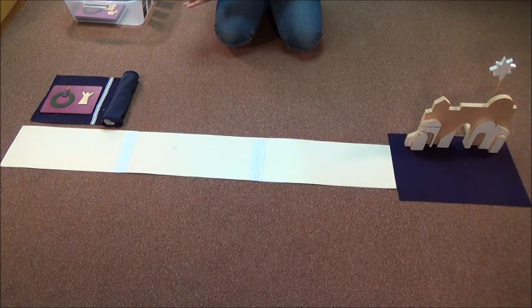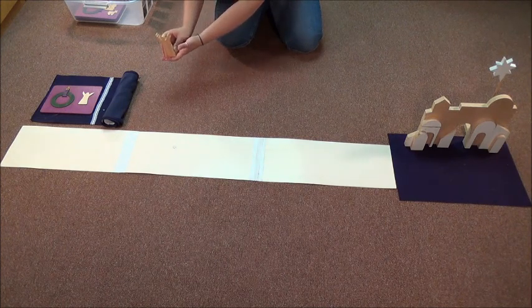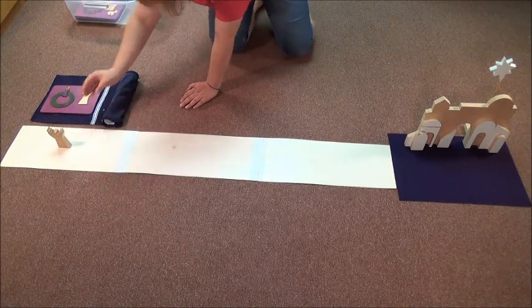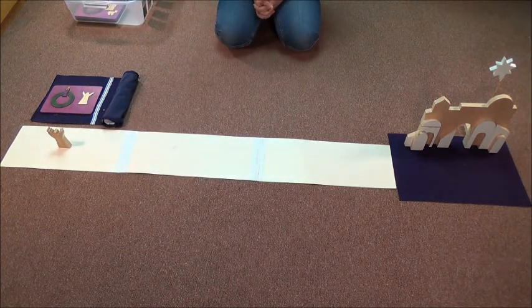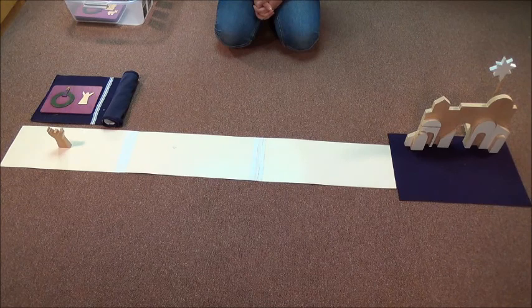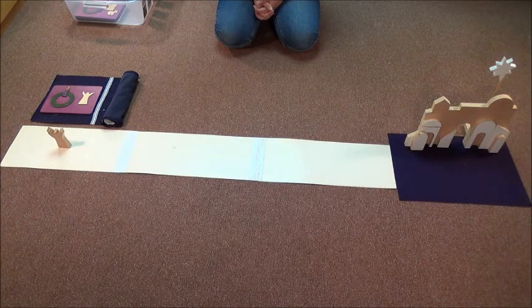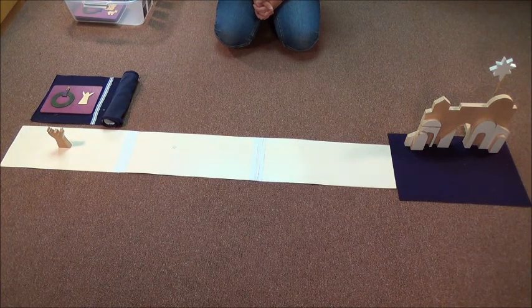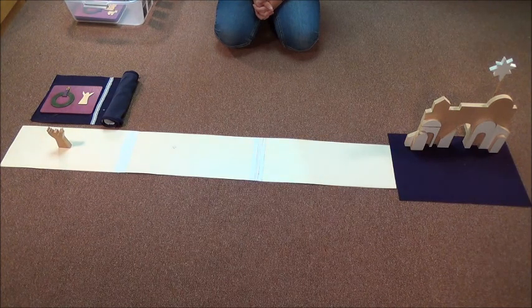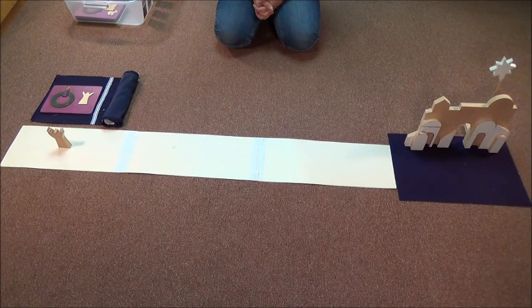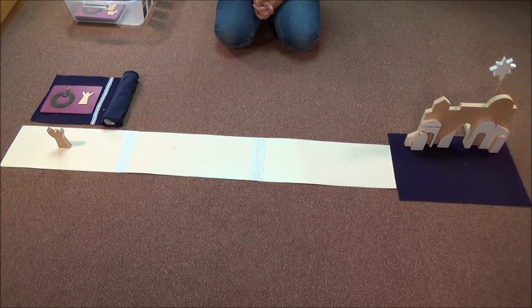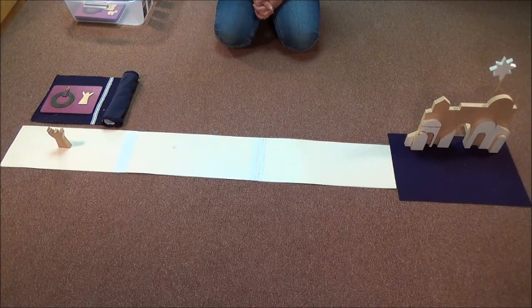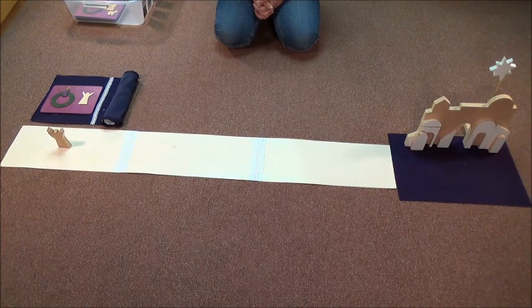Isaiah was a prophet who listened and spoke the word of God. He said one day the Messiah would be born. The Messiah would be like a light shining in the darkness. This is what Isaiah said: The people who walked in darkness have seen a great light. Those who dwelt in a land of deep darkness, on them a light has shined.